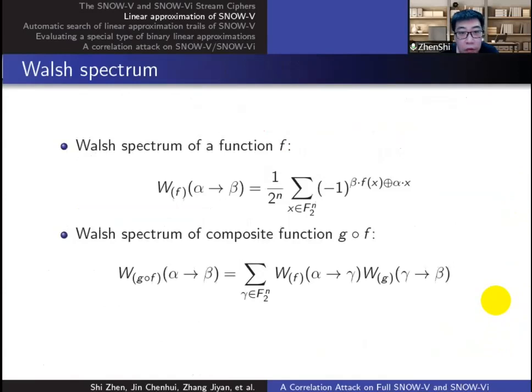For the approximation of a composite function, we can compute the correlation by the widely used Walsh spectrum theory. It is worth noting that the input variables x in this formula must be mutually independent and uniformly distributed.